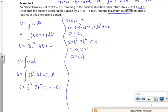So 0 is 1³ - 2(1)² + c1(1). So I've got 1 - 2, we've got -1 + c1, so c1 is 1. So this is c1, isn't it? So that must mean then that s = t³ - 2t² + t.